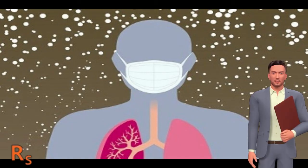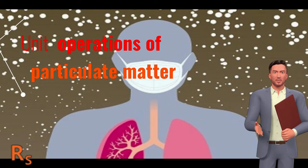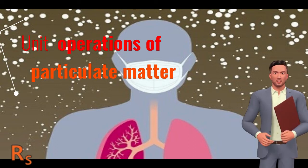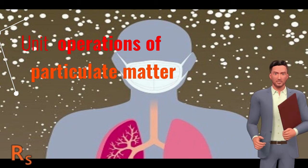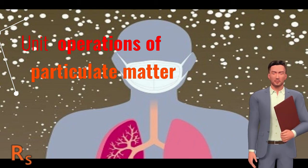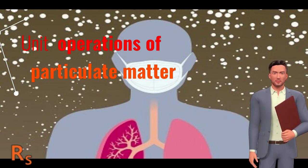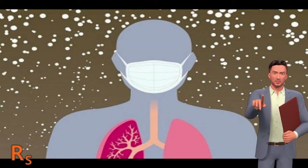Unit operations of particulate matter. About 75% of chemical manufacturing methods involve small solid particles at some duration. Proper design and handling of these fine particles usually make the difference between the success and failure of the product. Many merchandise such as catalysts, pigments, fertilizers, cement, ceramics, and pharmaceuticals are currently manufactured in particulate form.